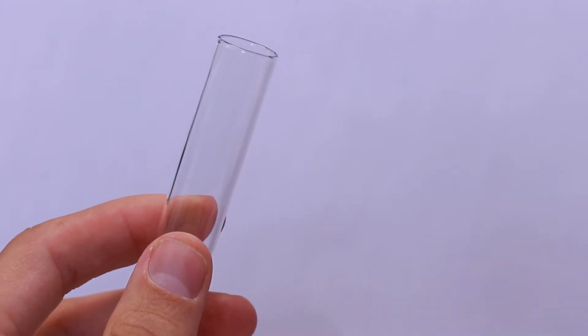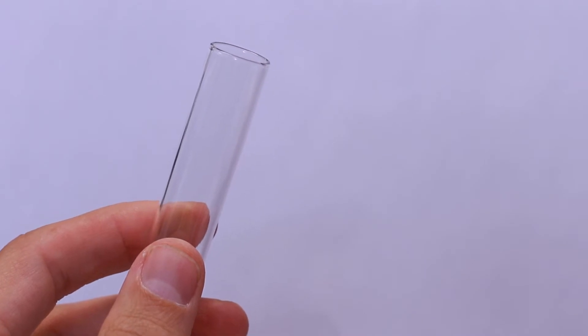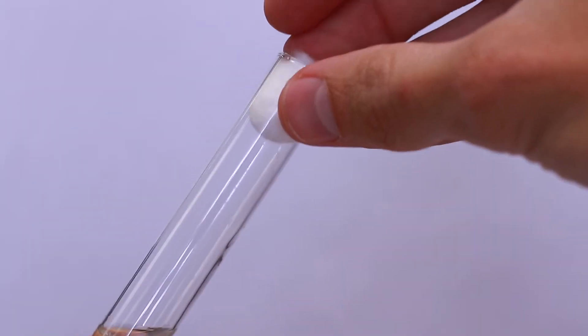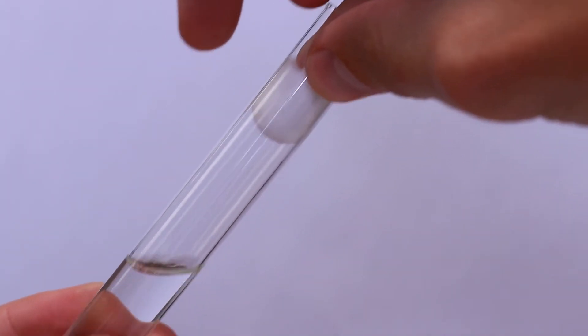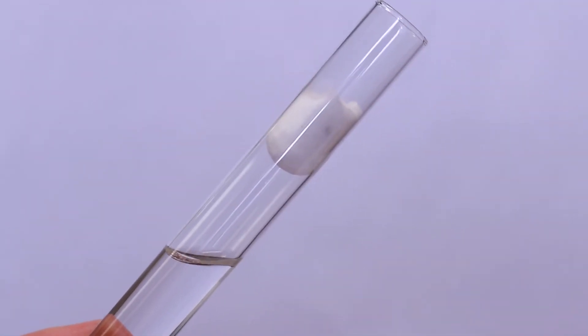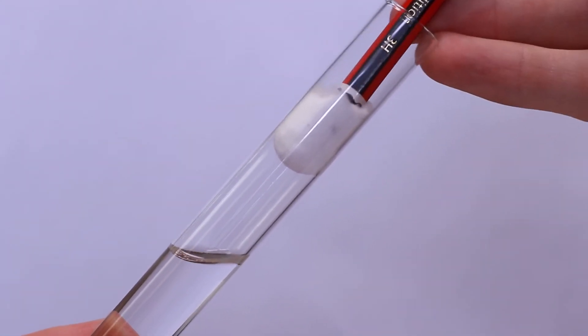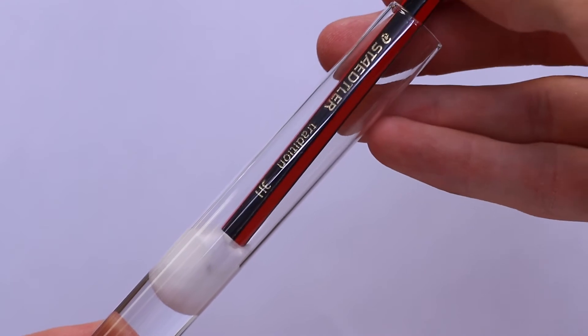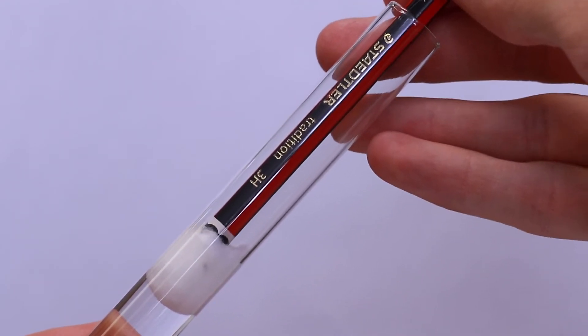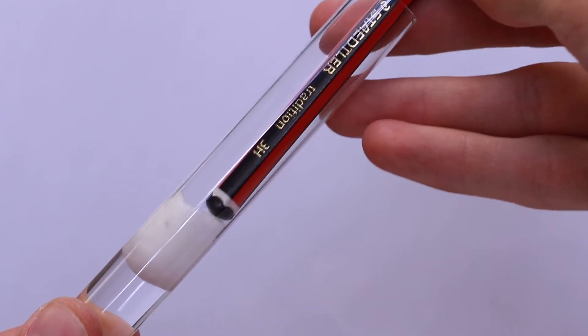Now you take your test tube, you fill it halfway with water and then you add a piece of cotton wool. And the trick here is to do it fast because if you don't do it fast enough, they will form a bubble behind the cotton in the water. This isn't a problem, it just doesn't look as good.